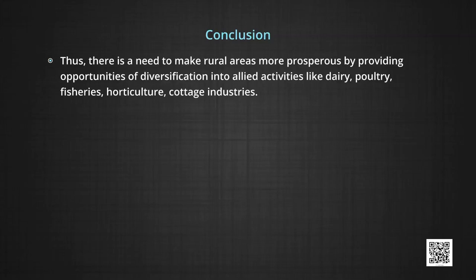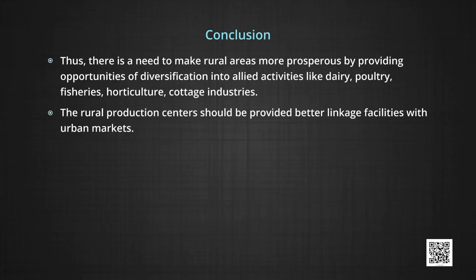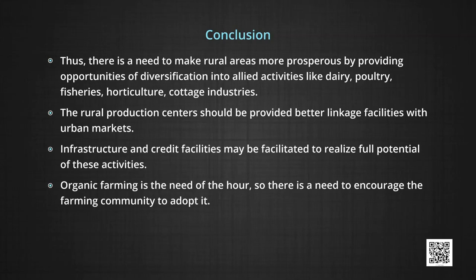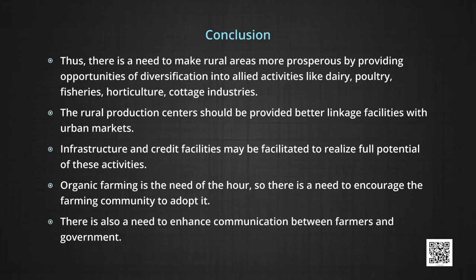In conclusion, there is a need to make rural areas more prosperous by providing opportunities for diversification into allied activities like dairy, poultry, fisheries, horticulture, and cottage industries. Rural production centers should be provided better linkage facilities with urban markets. Infrastructure and credit facilities may be facilitated to realize the full potential of these activities. Organic farming is the need of the hour, so there is a need to encourage the farming community to adopt it. There is also a need to enhance communication between farmers and government.